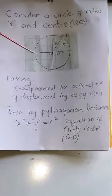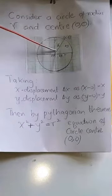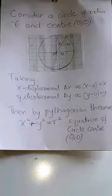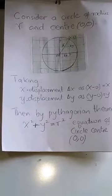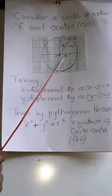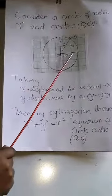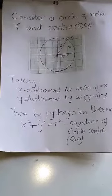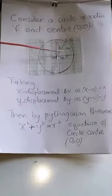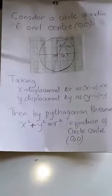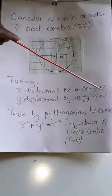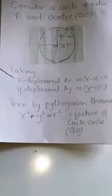Now, considering the x displacement, if you look at this triangle here, you realize it is a Pythagorean triangle because it is a right-angle triangle. The distance we are calling the x displacement is x minus 0, and the distance we are calling the y displacement is y minus 0. So the x displacement equals x and the y displacement equals y.